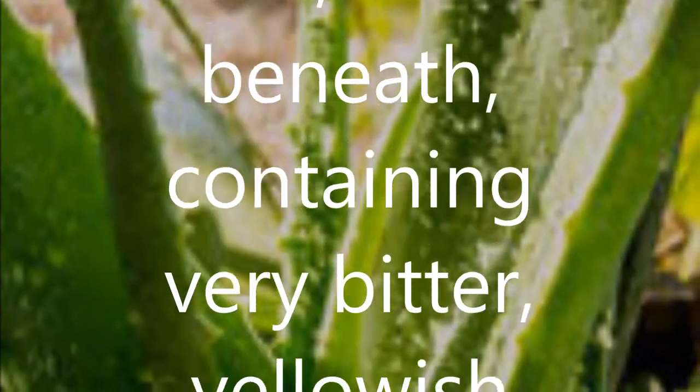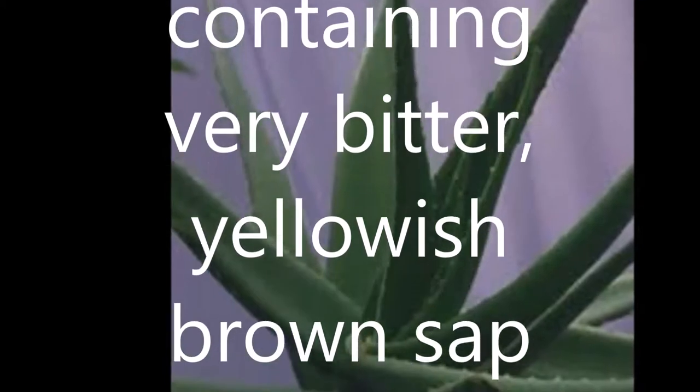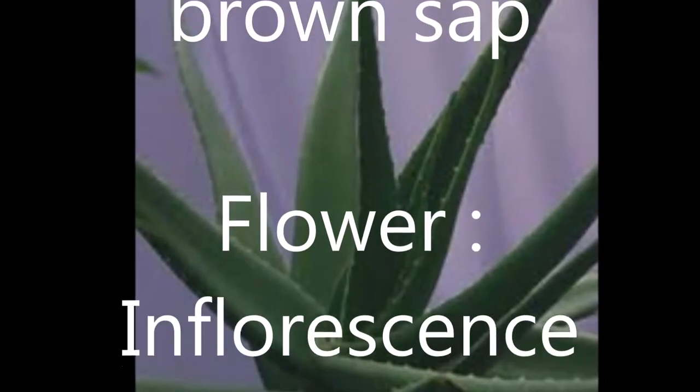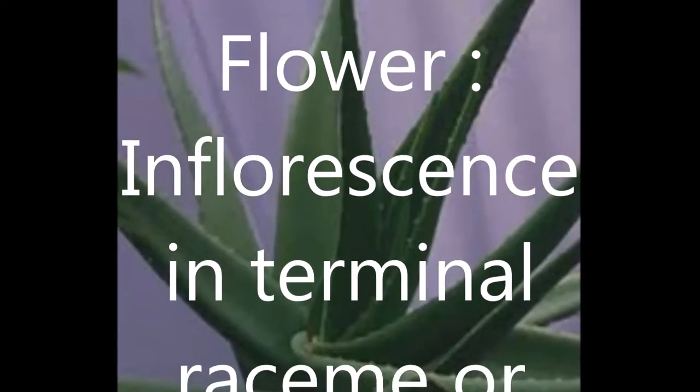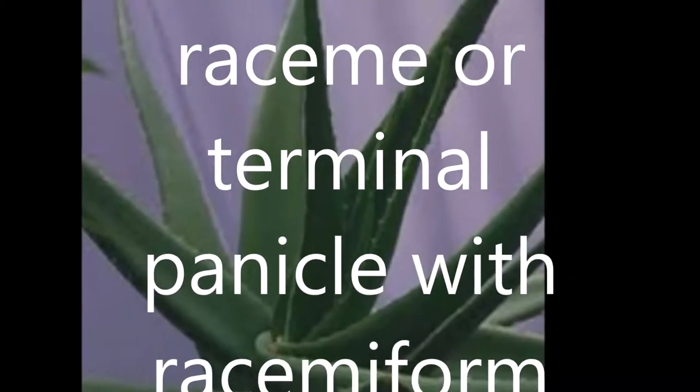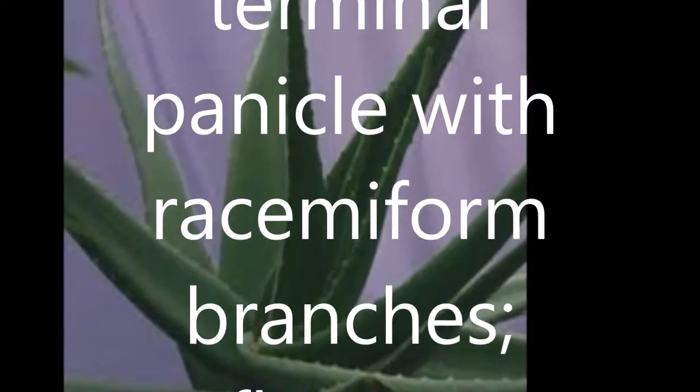Habit: herb with short stem. Leaf simple, densely rose-like, thickly fleshy, concave or rather flat above, convex beneath. Leaf containing very bitter, yellowish-brown sap.